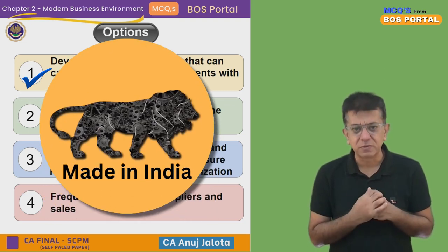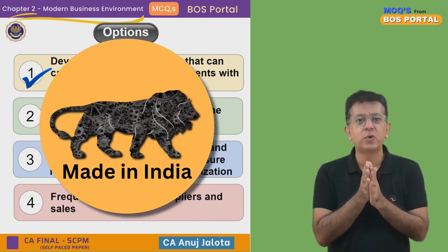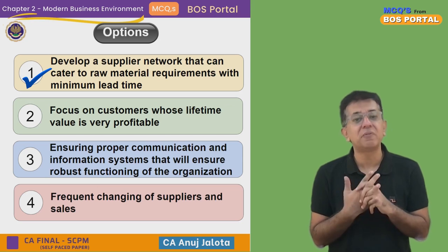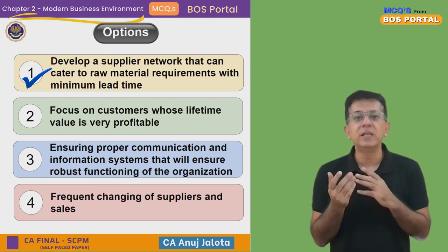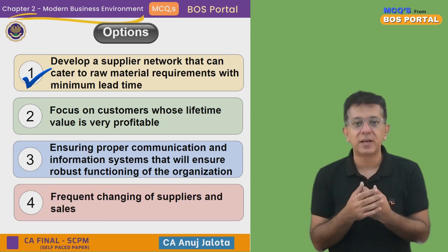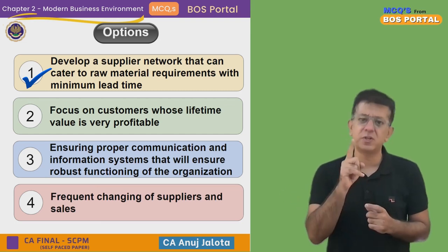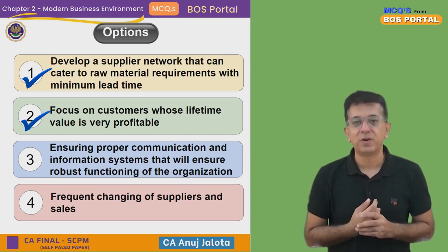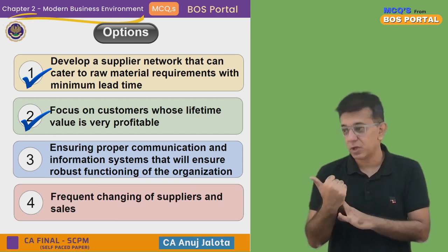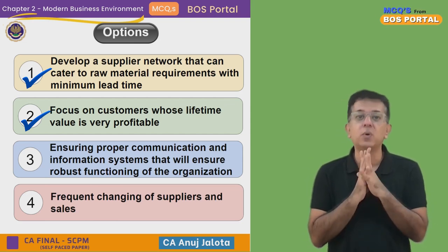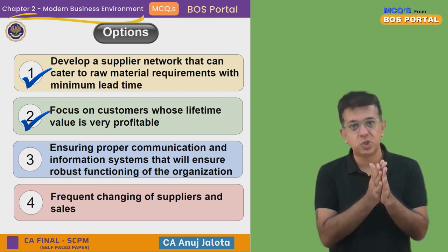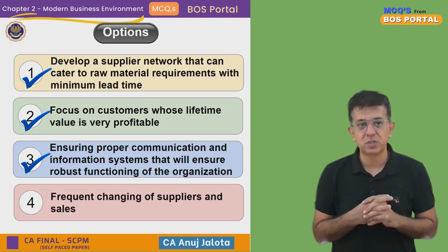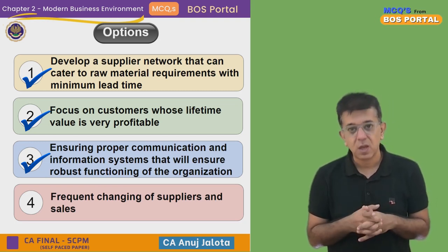You should always try to have a local supplier. These days there is the Make in India program, which emphasizes why we should depend on imports — yes, some things like technology should be imported, but if it can be made in India your lead times will be less and material will reach you without customs delays. So Option A is true and cannot be the answer. Option B — focus on customers whose lifetime value is very profitable — one part of supply chain is the final customer, so focusing on high lifetime value customers ensures high profitability. Option B is also valid.